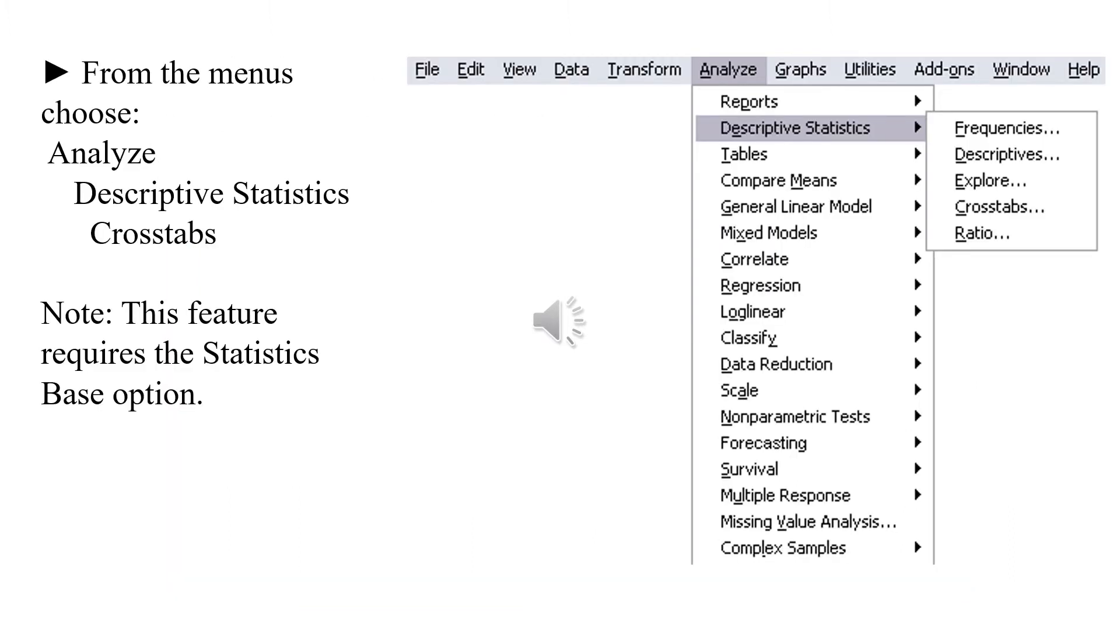To create a crosstab in data view window, go to the toolbar, select the tab Analyze, a drop-down menu will appear, select Descriptive Statistics, a side window will appear and then check Crosstabs.